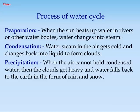Water steam in the air gets cold and changes back into liquid to form clouds. Precipitation: when the air cannot hold condensed water, the clouds get heavy and water falls back to the earth in the form of rain and snow.